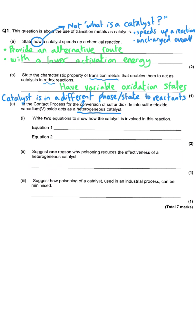They give us extra detail about a particular process we need to know — the contact process. It's the conversion of sulfur dioxide, SO₂, into sulfur trioxide, SO₃, with vanadium(V) oxide as the heterogeneous catalyst. Vanadium(V) oxide means the vanadium has a 5+ charge; since oxide ions are 2−, the common multiple is 10, giving the formula V₂O₅.